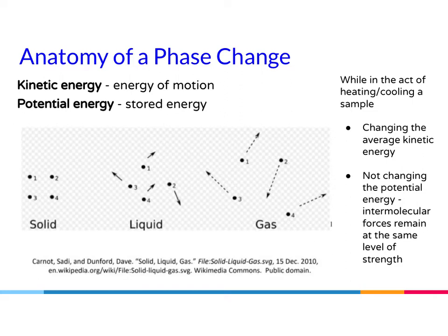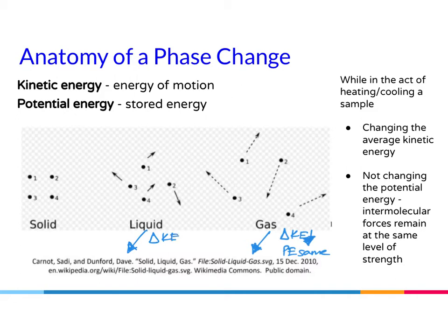Now let's look at what happens while you're in the act of heating or cooling a sample. If you are cooling a gas, you are affecting the average kinetic energy or the motion of those particles. As you decrease the temperature, the potential energy stays the same — the interactions between the particles remain the same. This holds true in the liquid state and the solid state as well: the average kinetic energy decreases as you lower temperature, but potential energy stays the same.